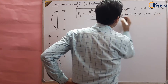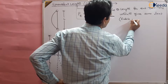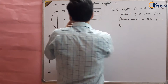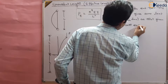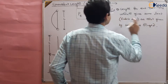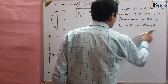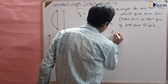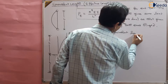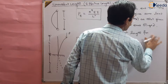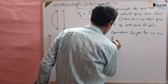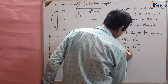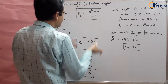The equivalent length is the length for end conditions which gives the same Euler's load as that given by the both-ends-hinged case. So the equivalent length for one end free and the other fixed is equal to 2L, because we compared π²EI/4L² with π²EI/Le² and obtained Le = 2L.